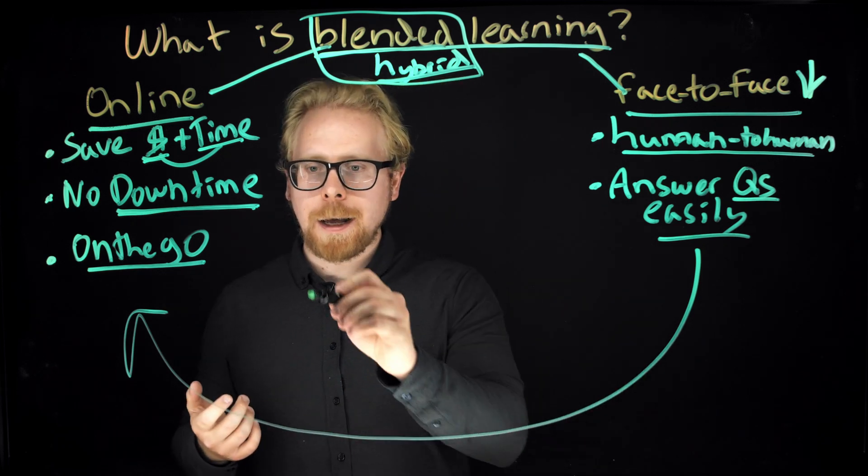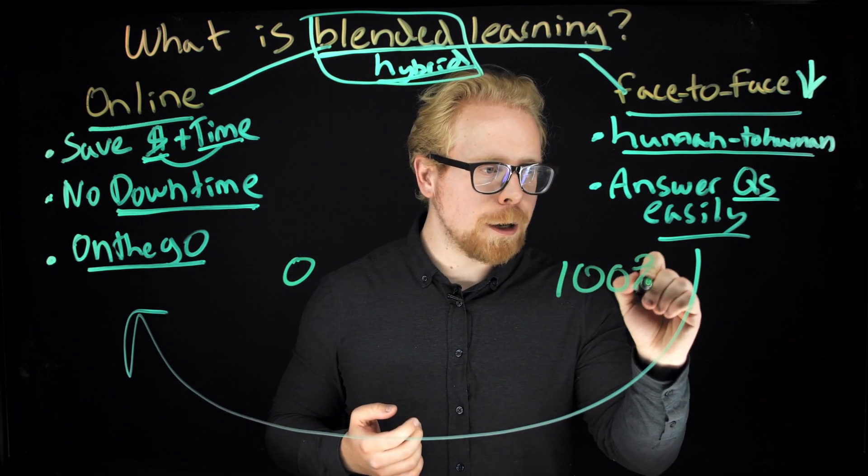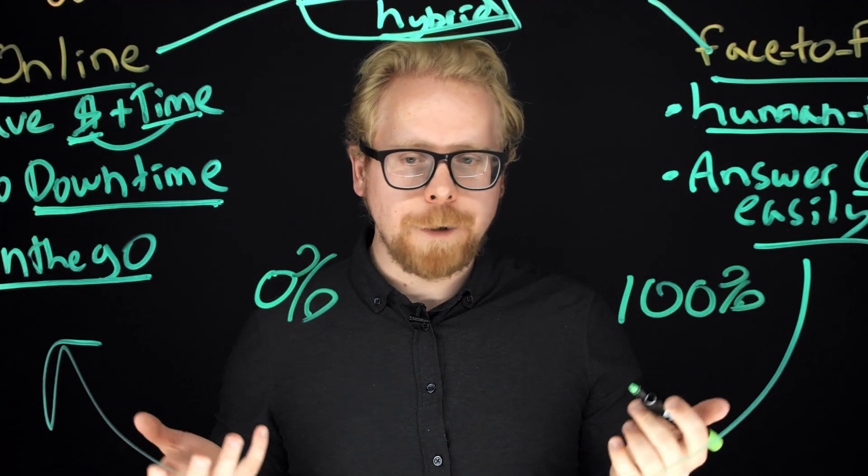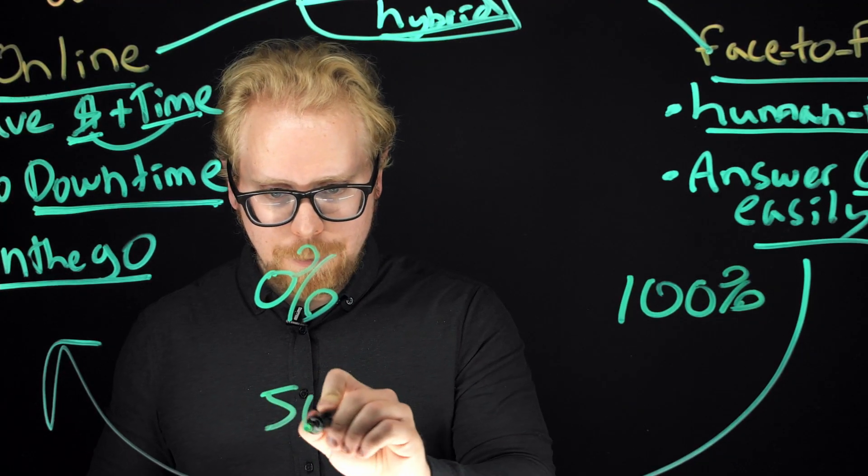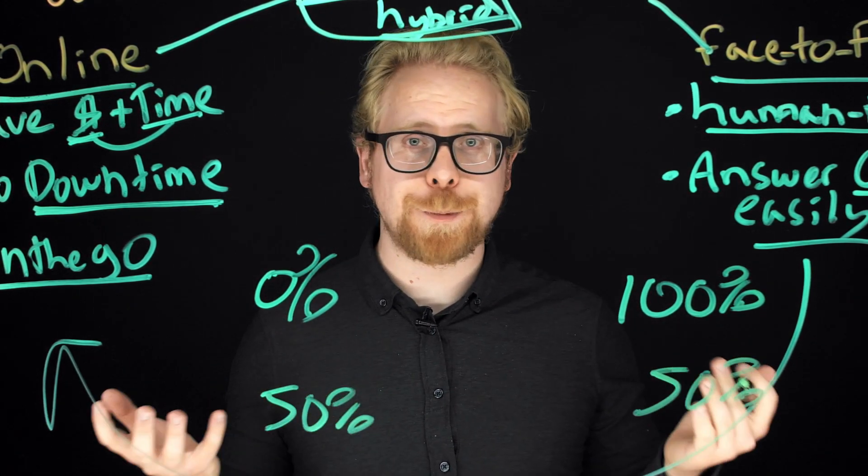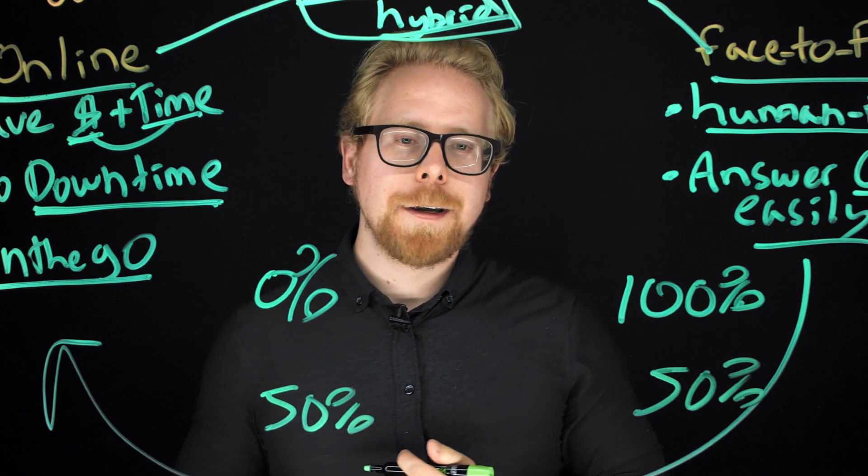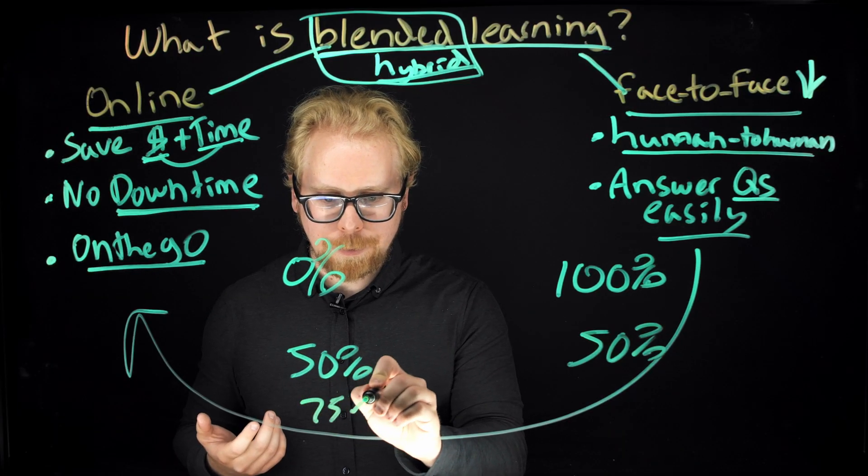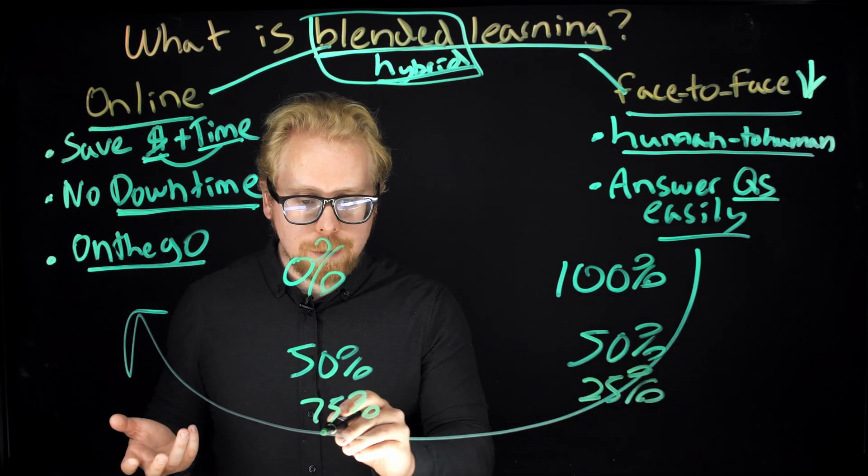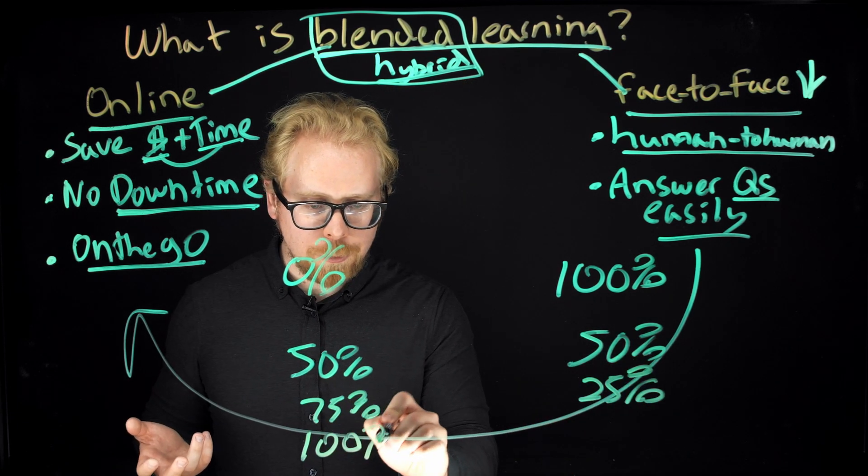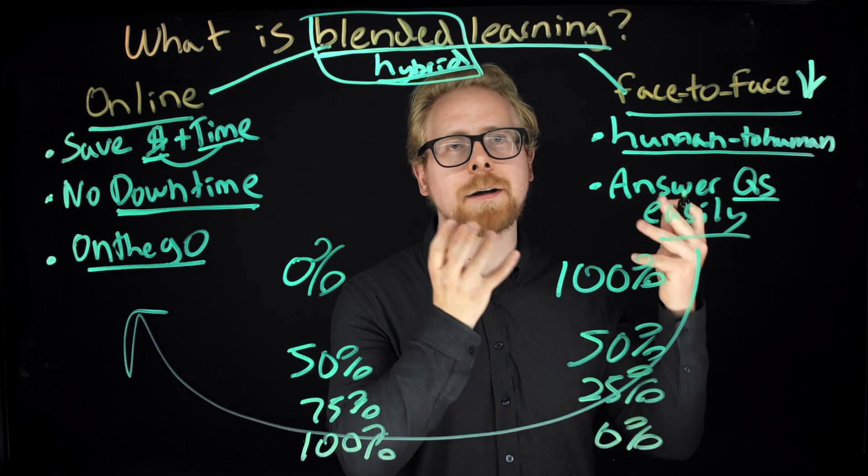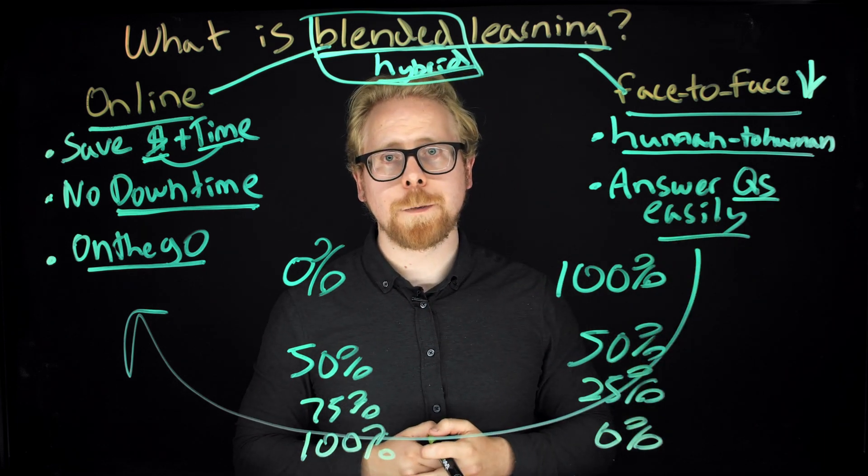If you started at zero and 100%, right? 100% face-to-face and zero percent online, and in five years you're 50-50, that's progress. That's amazing progress. And then let's say in 10 years you're 75-25, and eventually you may get it to be 100 and zero. But it's okay if you don't, because there's a lot of benefits of having at least some face-to-face component.